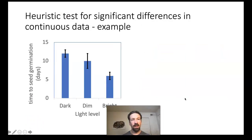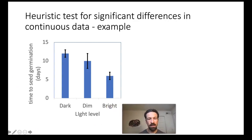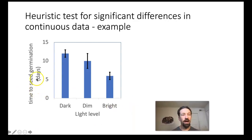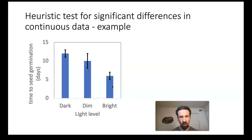You should now see a practice example where you can perform a heuristic test to look for significant differences, examining time to seed germination for a weed seed in three different light levels—complete darkness, dim light, or bright light. Your task is to determine for which comparisons we cannot rule out that chance alone caused the differences, and for which we can infer something more than chance.